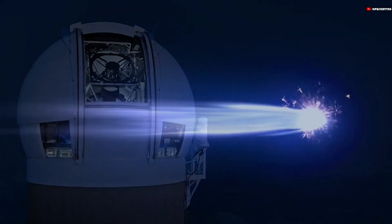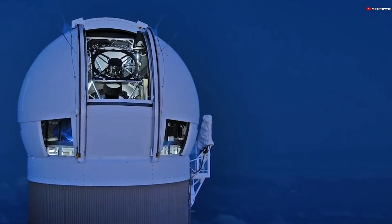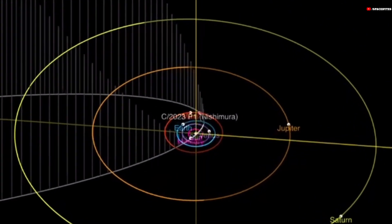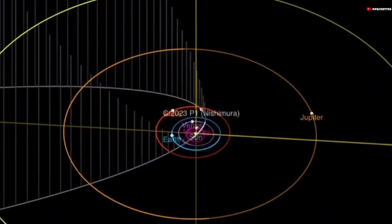At the time of writing, Comet Nishimura is a part of the Leo constellation. According to StarWalk, an astronomical application for stargazing, Nishimura has reached a magnitude of 4.0.